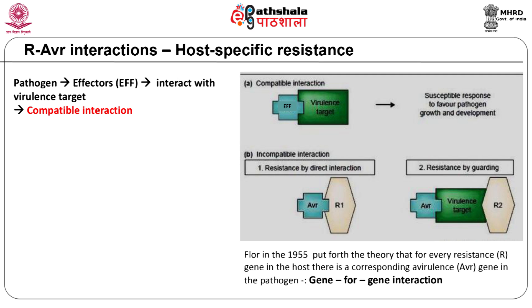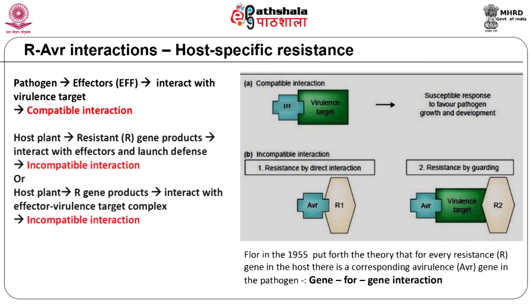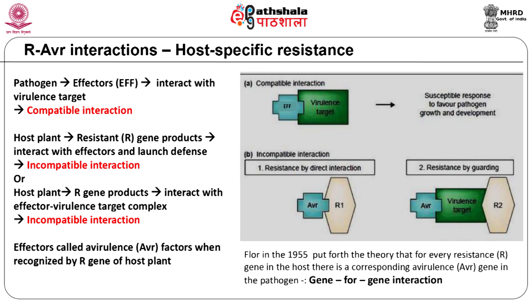In compatible interactions, effectors of a virulent pathogen interact with a virulence target protein and alter host plant metabolism so as to favor growth and development of the pathogen. In the expression of disease resistance, the resistance or R gene products of a host plant can recognize the pathogen effectors and transduce the signal to launch a defense response against the pathogen. The effectors in this case are called avirulins or AVR factors. In nature, this evolutionary warfare between the pathogen and host goes on — the pathogen evolves new effectors that cause disease while the host plant evolves new R gene products and activates defense mechanisms.